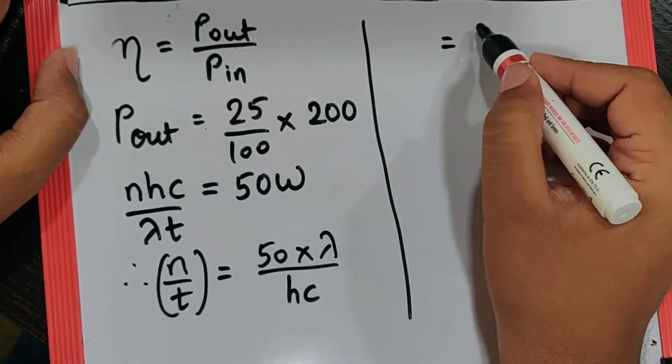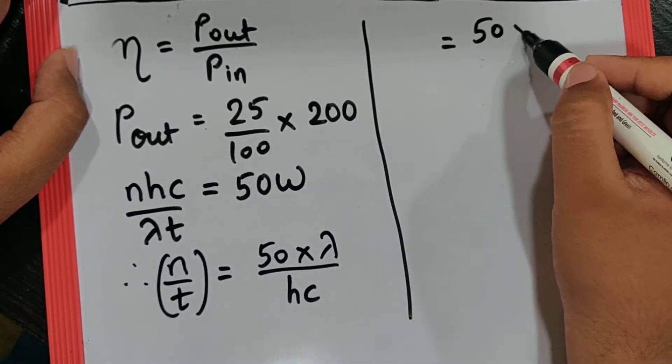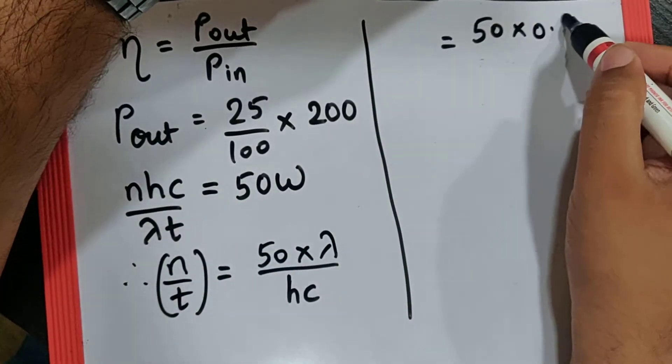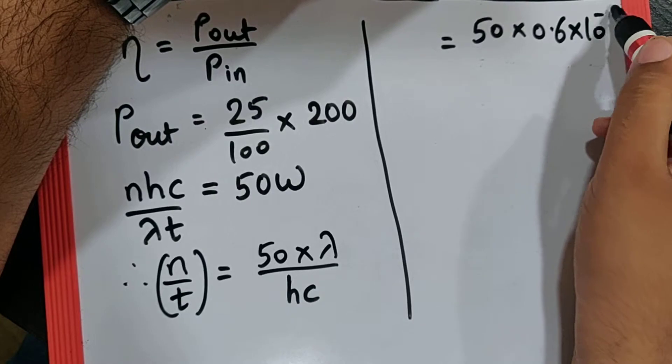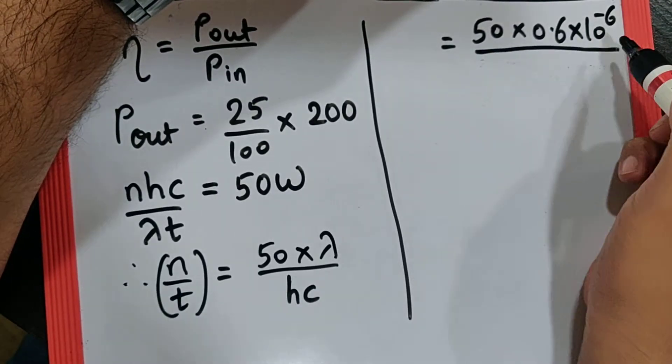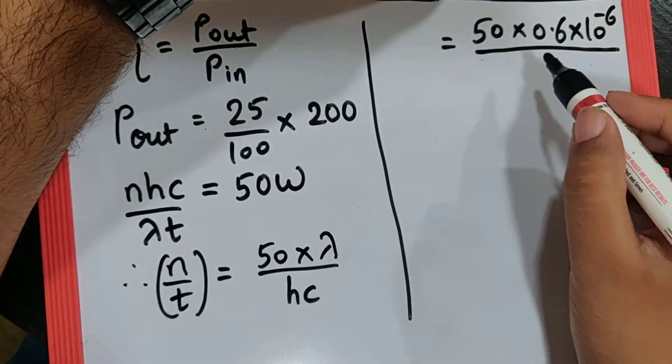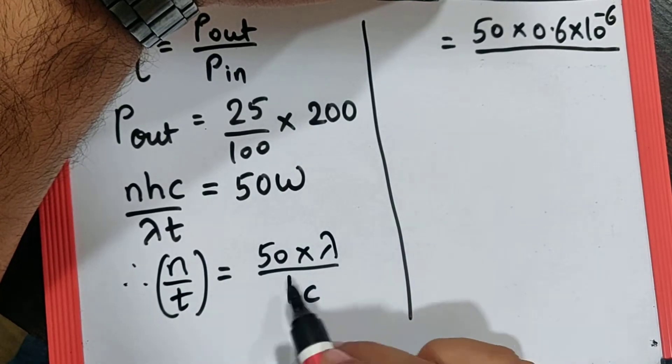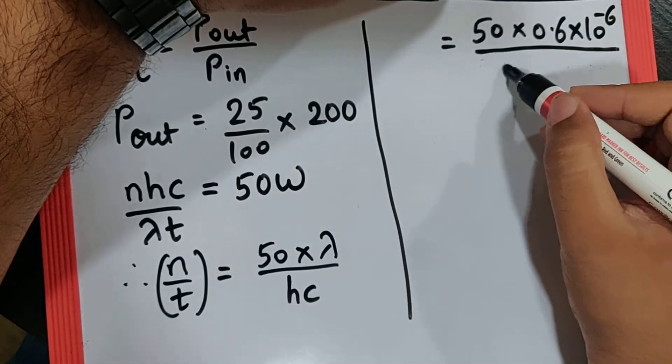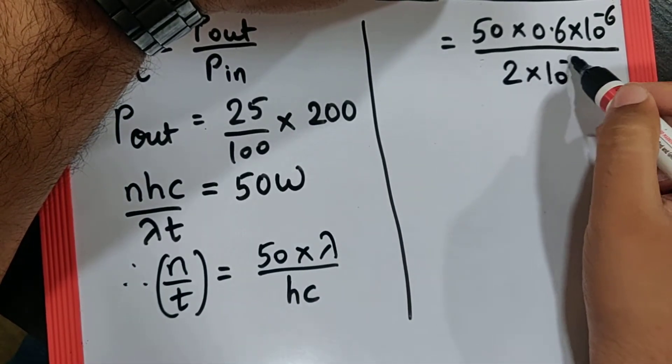If I substitute the values and calculate, I get 50 × 0.6 × 10^-6, since the wavelength is given as 0.6 micrometer, divided by the shortcut value of hc, which you can use as 2 × 10^-25.